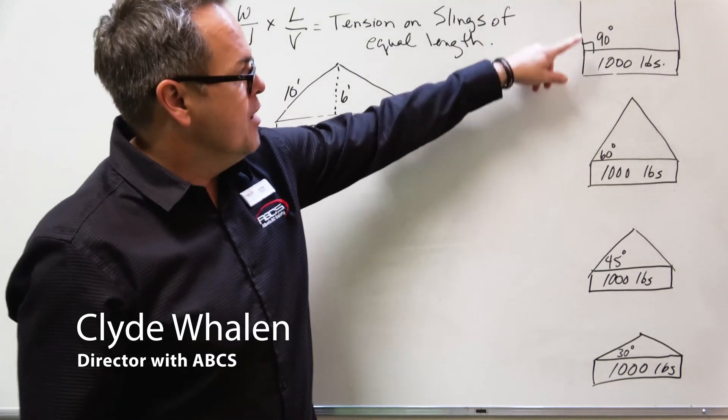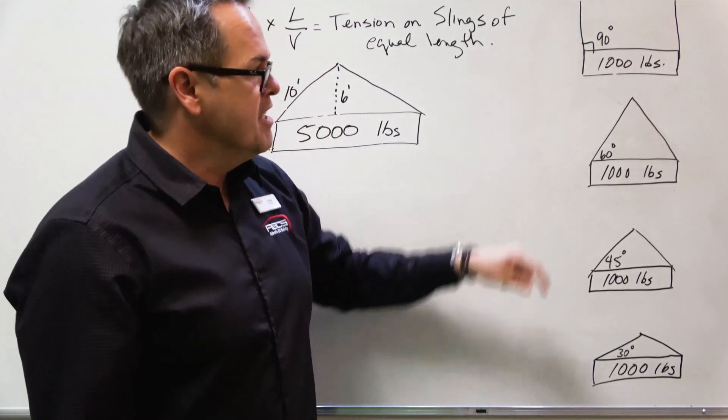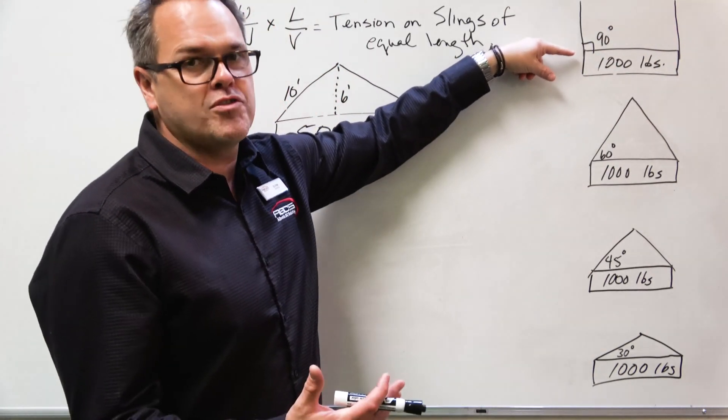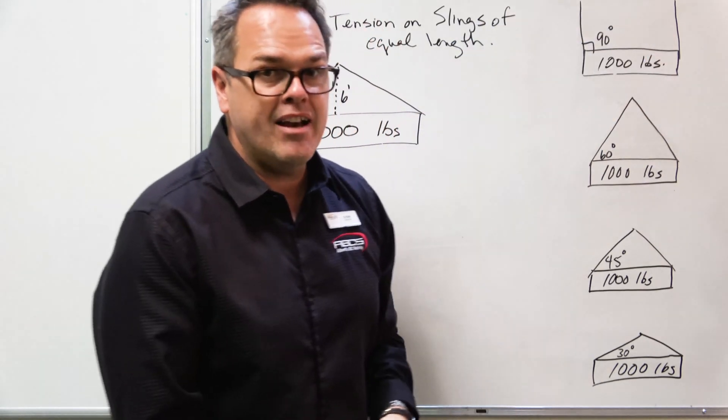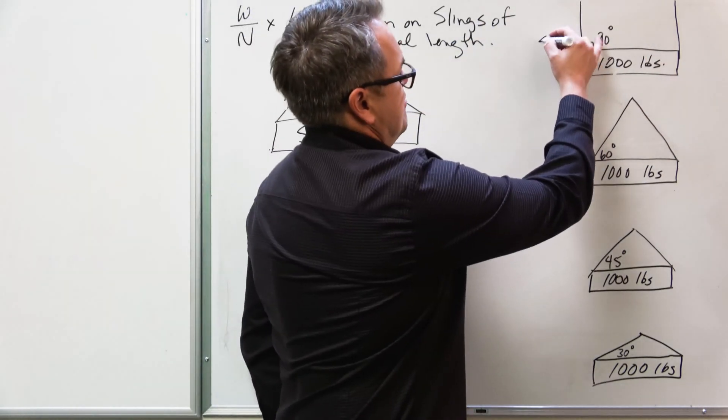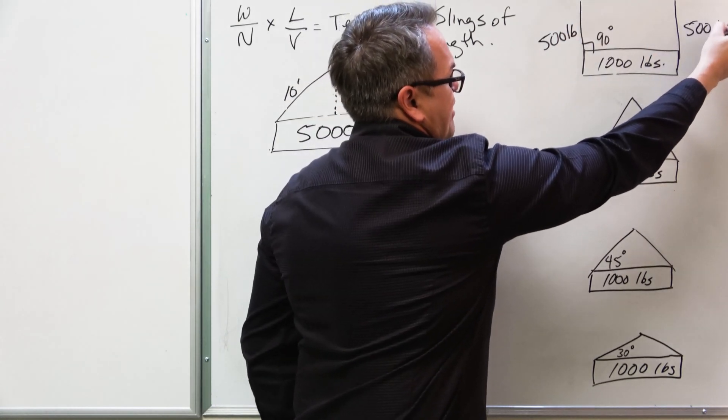Let's say we're going to lift a thousand pound load, and we had two slings. And we made up those slings at perfectly 90 degrees. If we were to measure how much force or tension, straight pull force, is on each of these slings lifting a thousand pounds at 90 degrees, it would be half the load. Each sling would be lifting half the load.